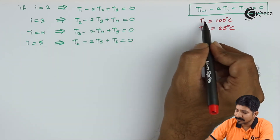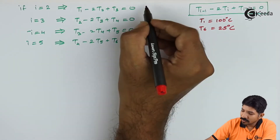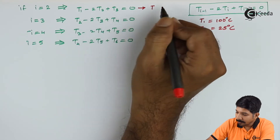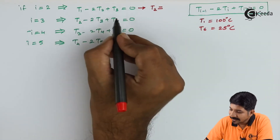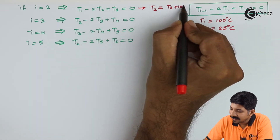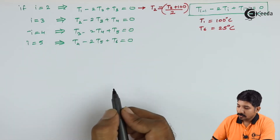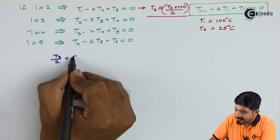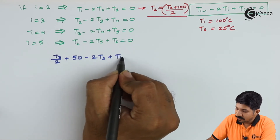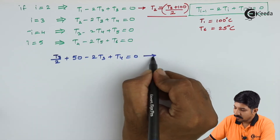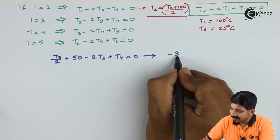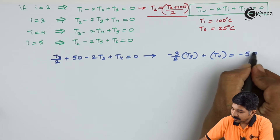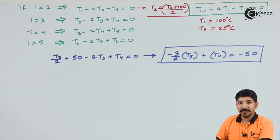Let us simplify by substituting the value of T1 into the equation for i=2. We can write T2 in terms of T3 as T2 = (T3 + 100) / 2. Substituting this into the equation for i=3 gives (T3/2 + 50) minus 2T3 plus T4 = 0, which becomes our first simplified equation.